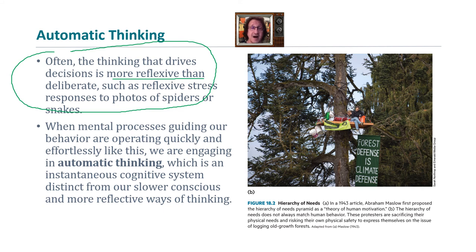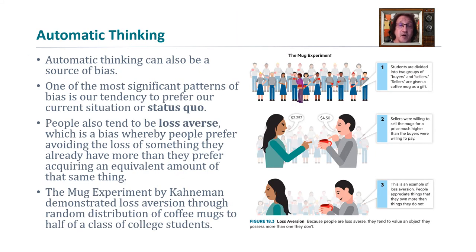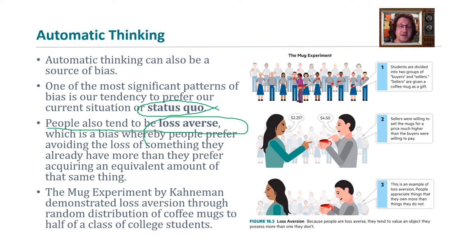Consider your own status quo — your habitual way of doing things — and loss aversion, which makes you resistant to changing your way of life. Automatic thinking is not insurmountable; we can teach ourselves and slowly work new habits into society. Our own college has implemented energy efficiency programs, recycling programs, and waste reduction programs as examples of institutional behavior change.